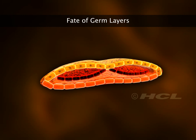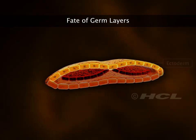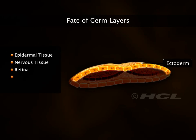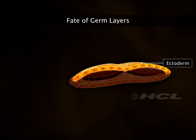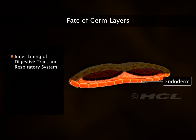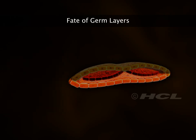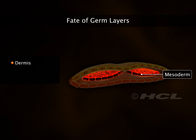Gastrulation establishes the body pattern — each tissue and organ of the adult originates in one of the three primary germ layers of the gastrula. The ectoderm gives rise to epidermal tissue, nervous tissue, retina, lens, cornea, etc. The endoderm forms the inner lining of the digestive tract, liver, pancreas, inner lining of the respiratory system, urinary bladder, urethra, and vagina. The mesoderm gives rise to the dermis, all types of muscular tissue, and various connective tissues.